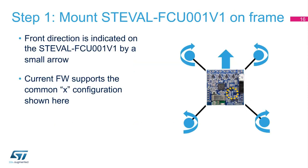The ST EVAL FCU-001V1 must be mounted in the center of the drone, equidistant from the four motors. The board must be mounted as flat as possible and well attached to the frame. You can use an adhesive sponge between the frame and the FCU board to minimize mechanical vibration from the motors. The front direction is indicated on the ST EVAL FCU-001V1 by a small arrow. Current firmware supports the common X configuration shown here.